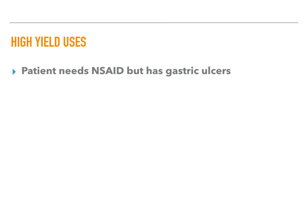If the patient needs an NSAID but has gastric ulcers or some other bleeding risk, you can't give them a classic COX-1 inhibitor. What do you give them? You give them celecoxib. Celecoxib is high yield because it's the only COX-2 inhibitor, making it the go-to in patients who need an NSAID but can't tolerate a classical COX-1 inhibitor.